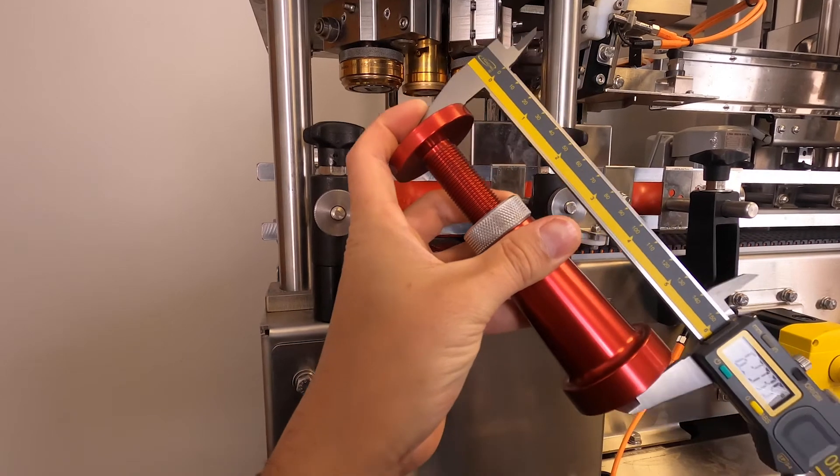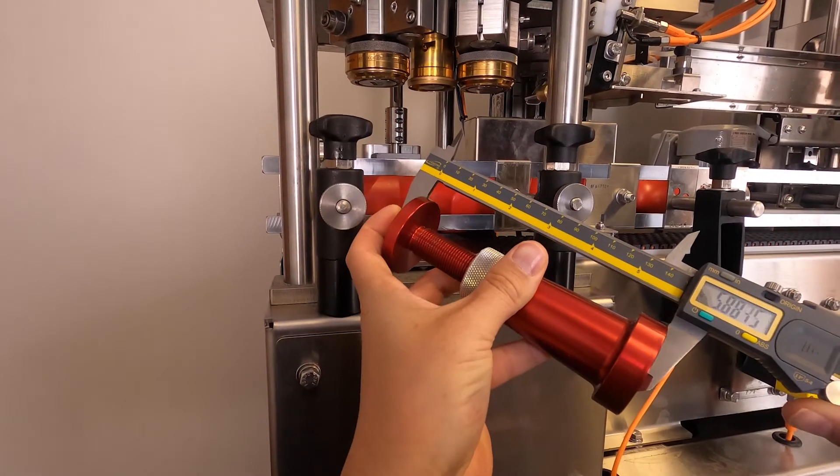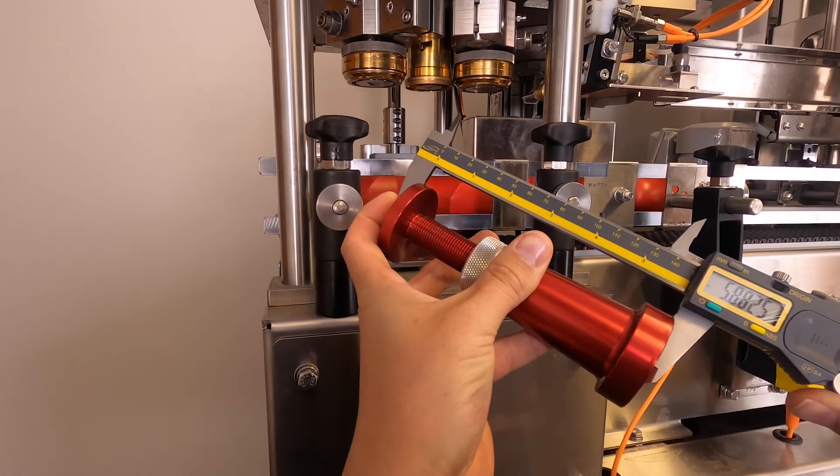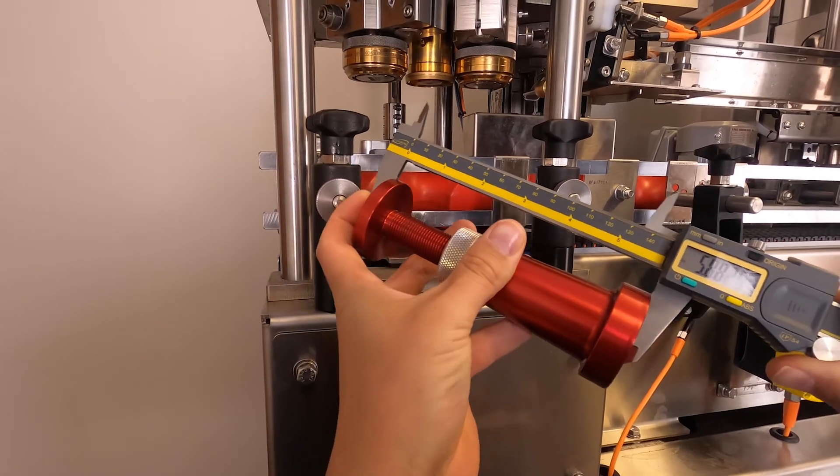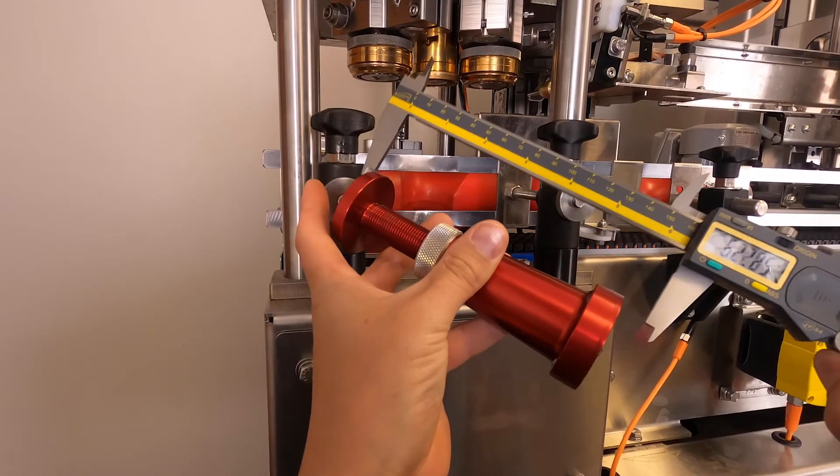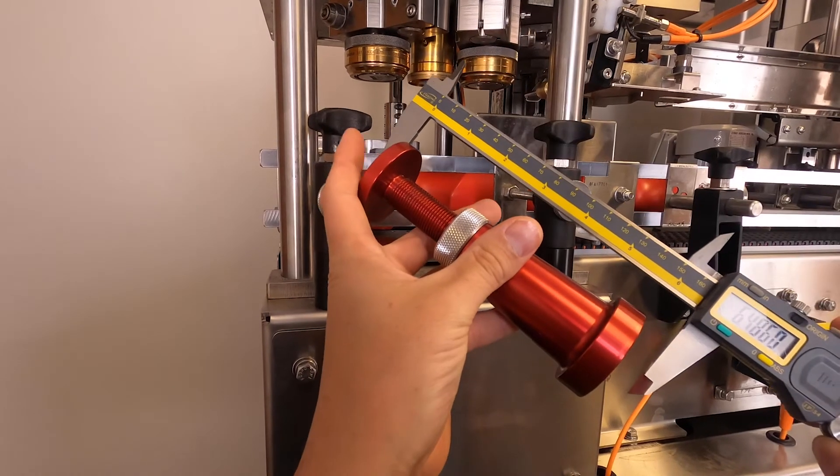A couple thousandths of an inch make all the difference for this set point. It is also a good idea to take a few separate measurements in case the calipers sit a little off axis or anything skews the numbers on one or two of the readings.